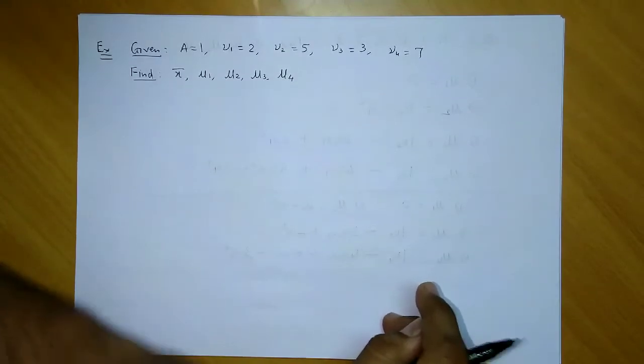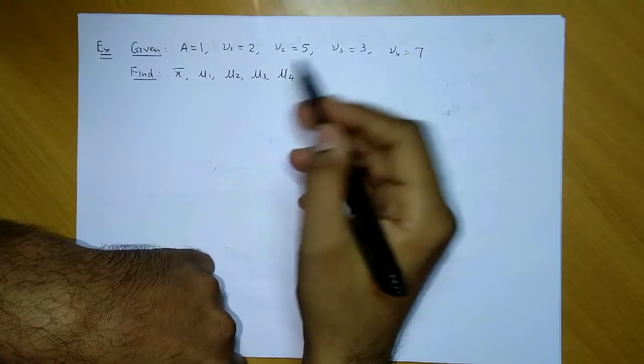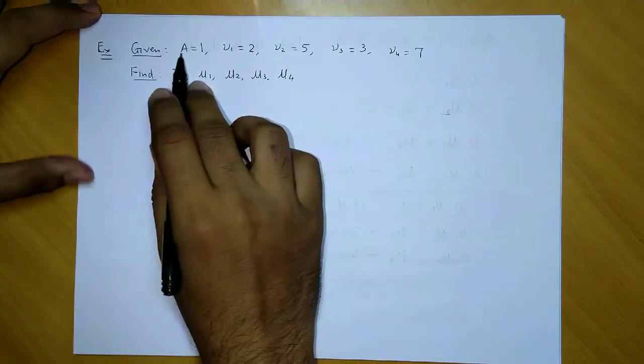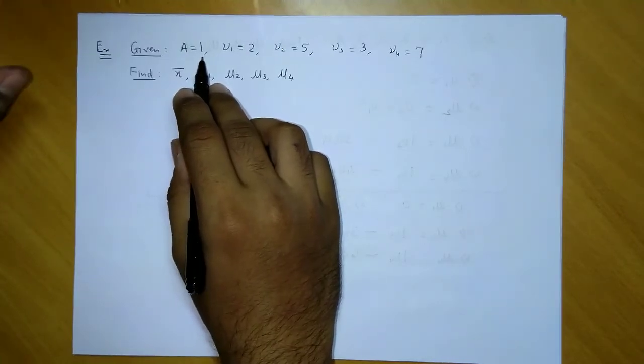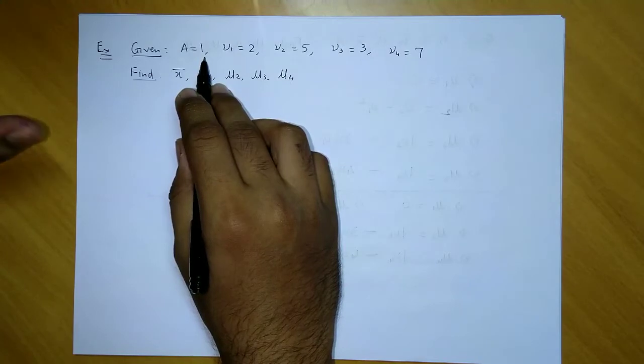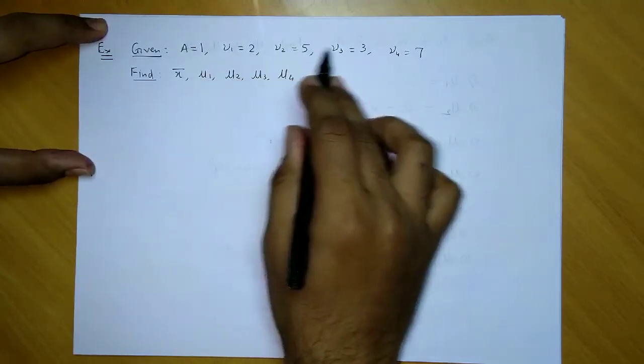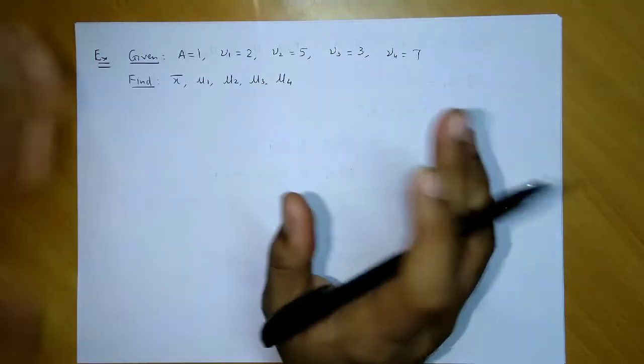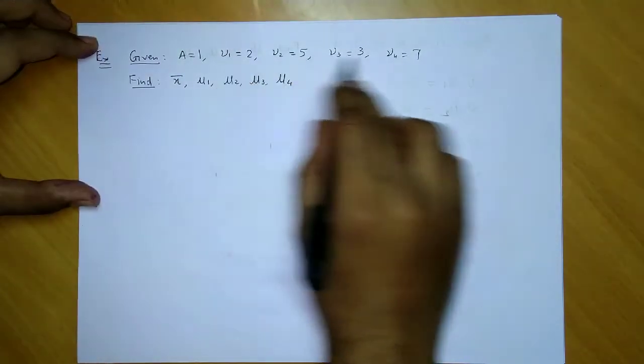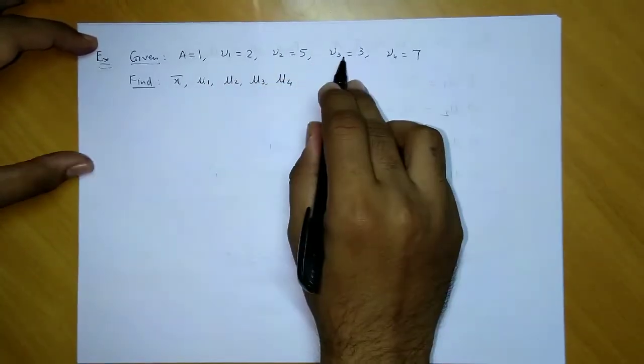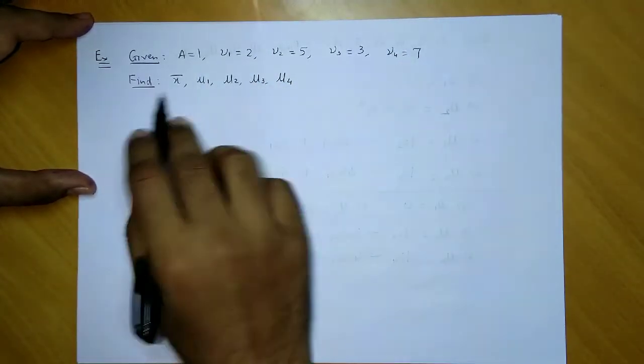Let's take an example to convert arbitrary moments into central moments. Data: A = 1. I'll use new notation (v) to avoid confusion between nu and mu. Let me call these v1, v2, v3, v4 so you can easily distinguish. These are arbitrary moments given, and you have to find x̄ (mean), then the four central moments μ1, μ2, μ3, and μ4.